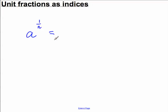Well, there's no way of deriving the answer here or thinking logically about it. It is simply a definition. A base number to the one over n is always equal to the nth root of that number.